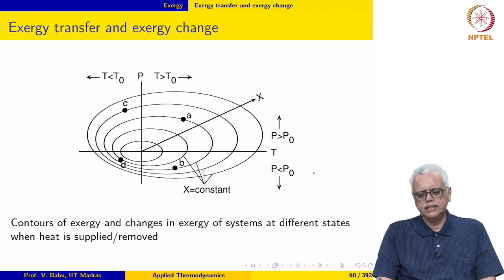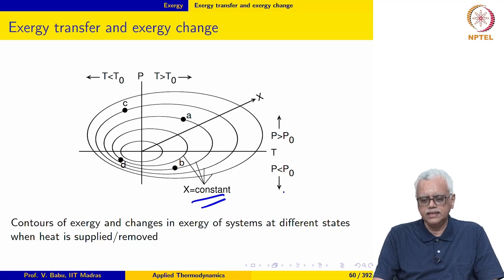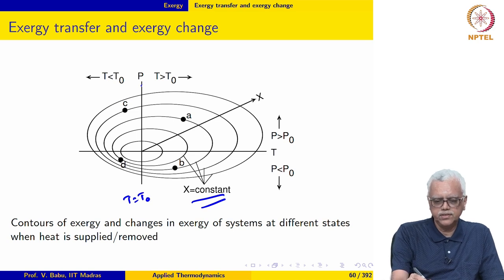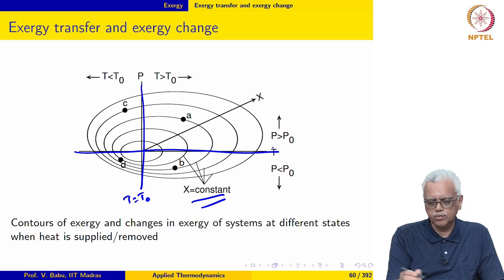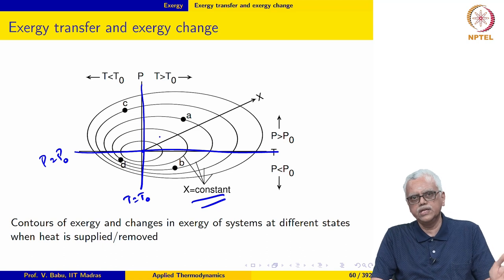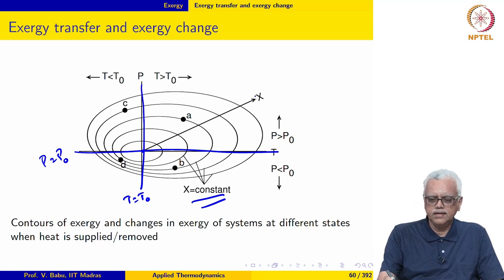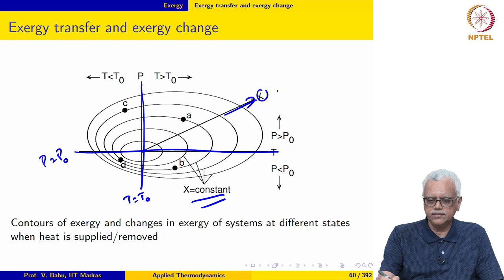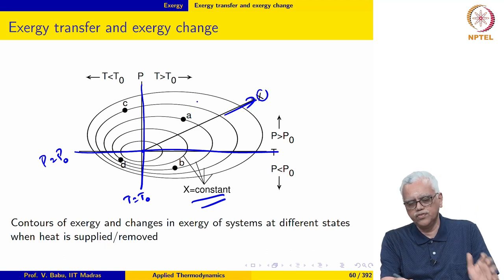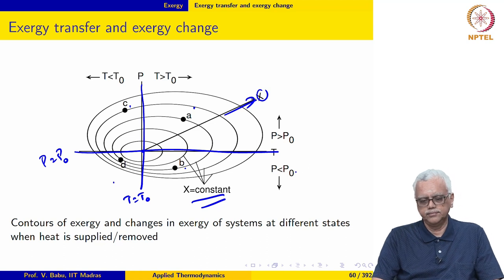Here, contours of exergy x = constant are plotted on a P-T coordinate system. The vertical line corresponds to temperature T = T₀ (the ambient temperature) and the horizontal line corresponds to P = P₀. The origin is the ambient state itself where P = P₀ and T = T₀, so x = 0 at the origin. Exergy is positive and increases in the radially outward direction. We consider systems initially at four different states A, B, C, and D.